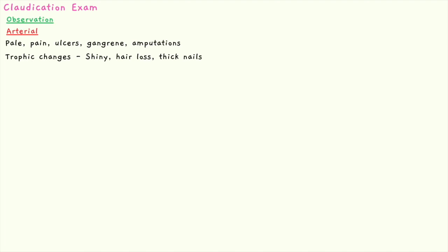The limb would be painful, especially painful at rest. You may see ulcers on the lateral malleolus, gangrene — which is when you have prolonged ischemia resulting in necrosis and then a superimposed infection — and you may see this in diabetes. And then finally, amputations of the toes, which are easy to miss if you're not cognizant of it.